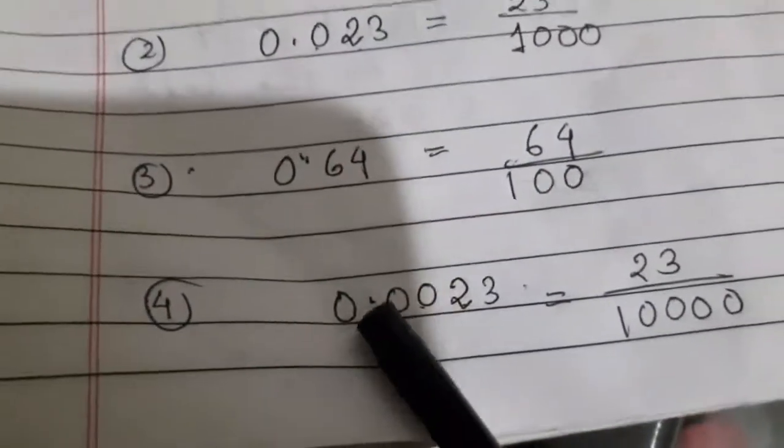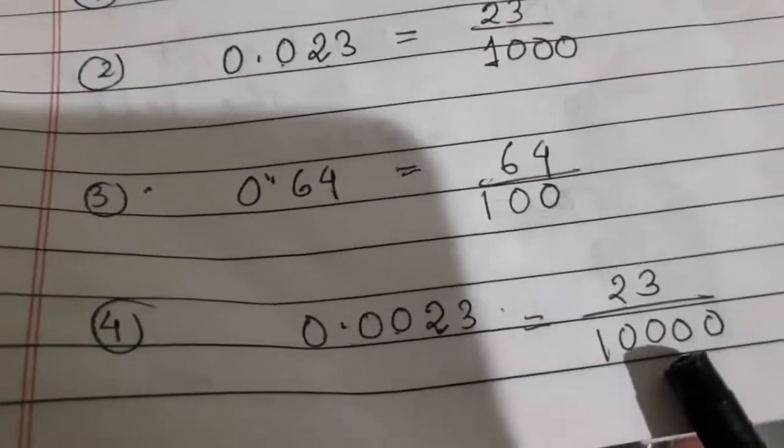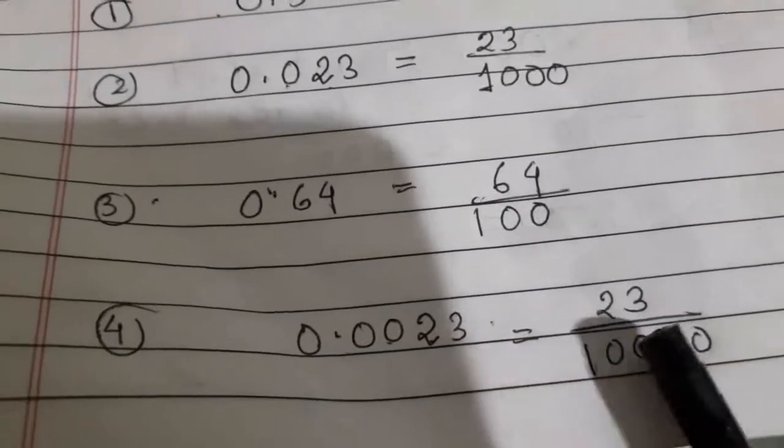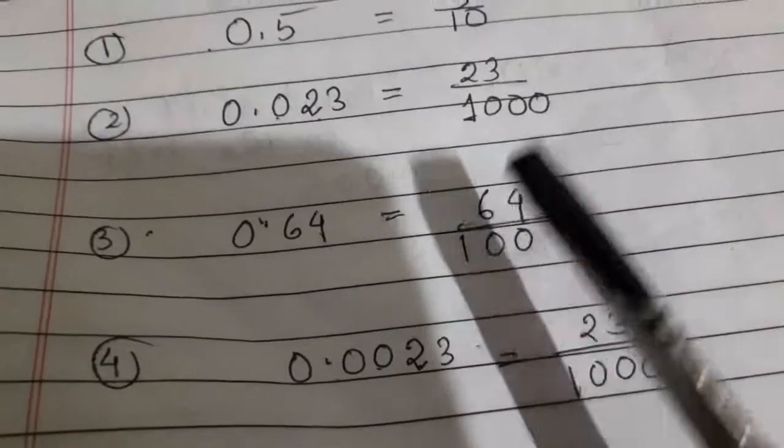And here you see 0.0023. One, two, three, four zeros. Therefore we put one, two, three, four zeros. We write this way, this number, then remove the point.